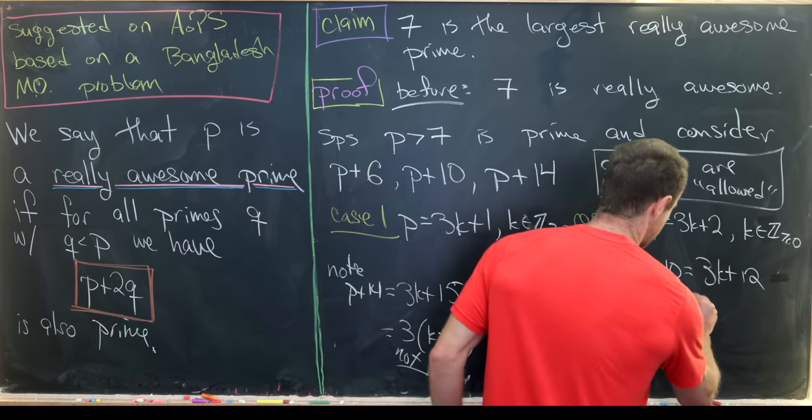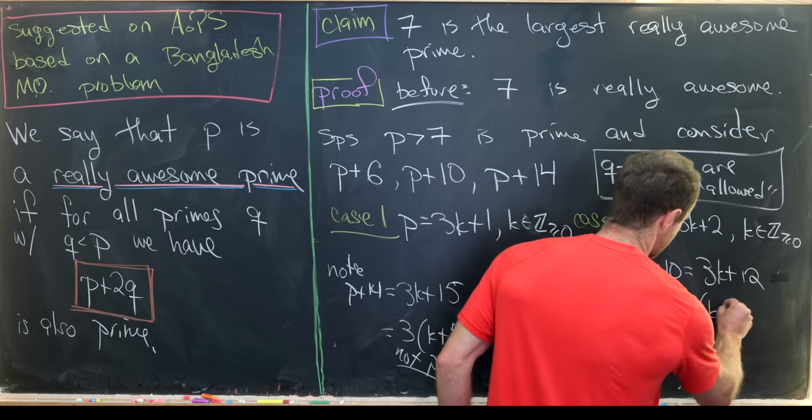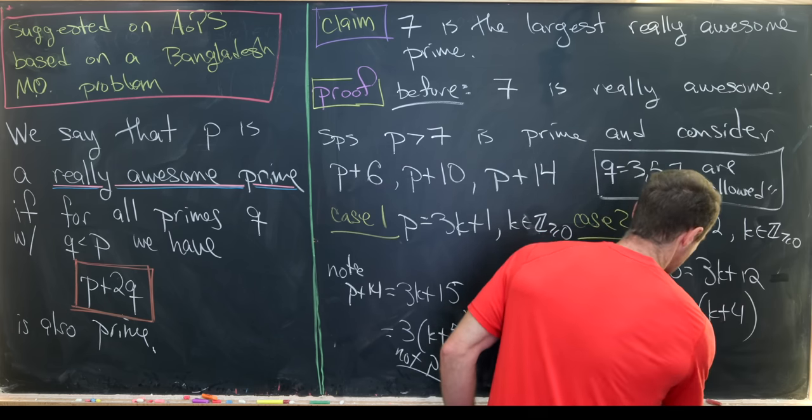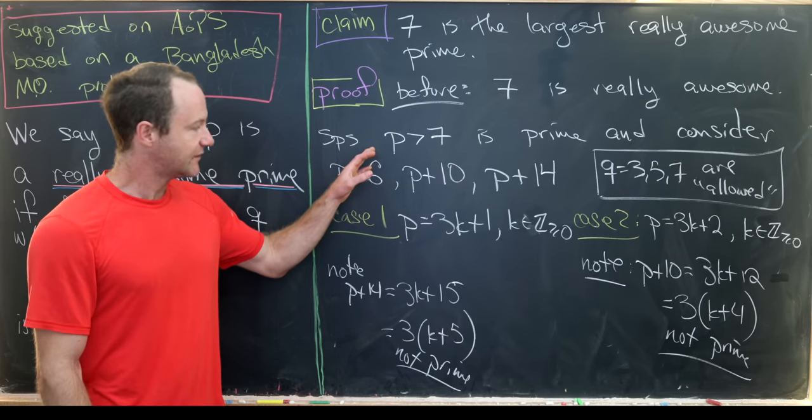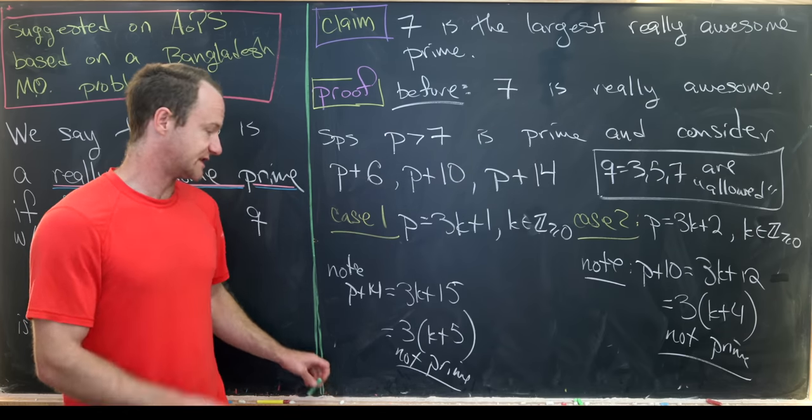So let's note that p plus 10 here is the same thing as 3k plus 12. But then we can factor a 3 out of that and we get 3 times (k plus 4). Again, this is not prime.